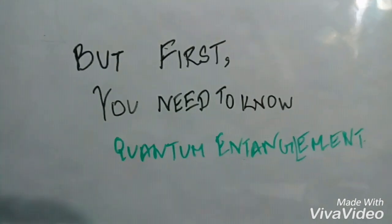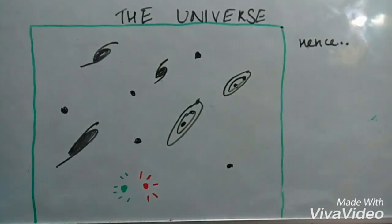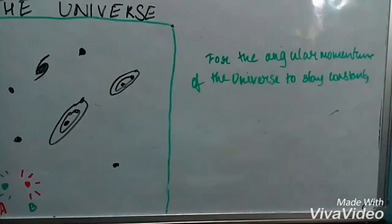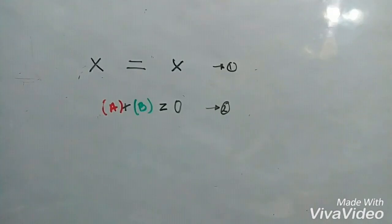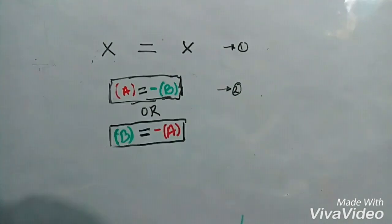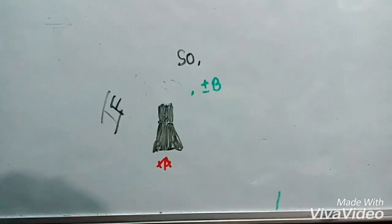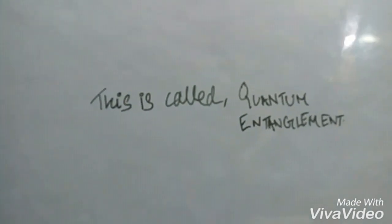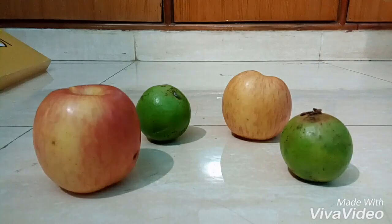But first you need to know quantum entanglement. In the universe, angular momentum must stay constant. Hence, if two particles come into existence, their angular momenta must be opposite in magnitude. This can be proved with some simple algebra. Also, these particles must stay in superposition — that is, they must have both plus and minus angular momentum at the same time. Yes, the quantum world is strange. This is called quantum entanglement.